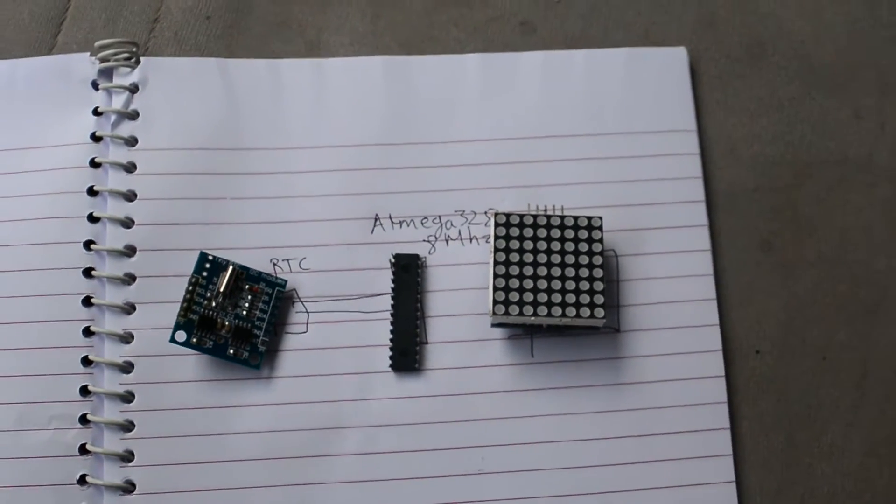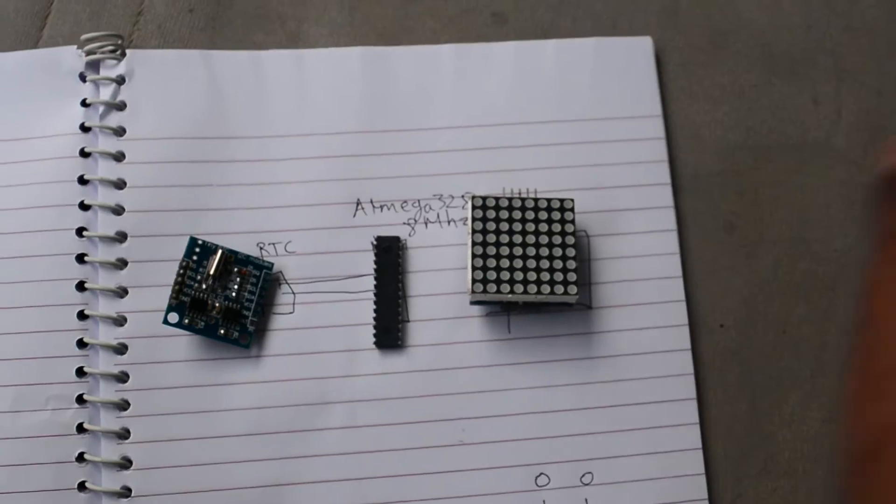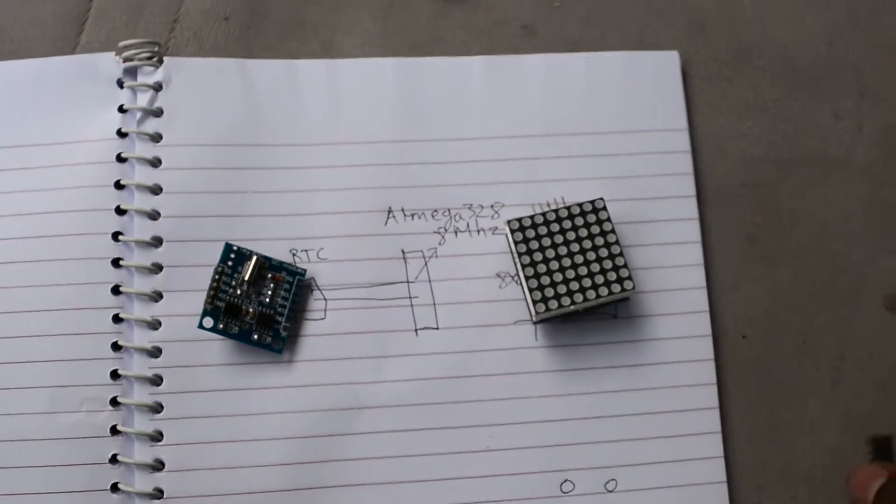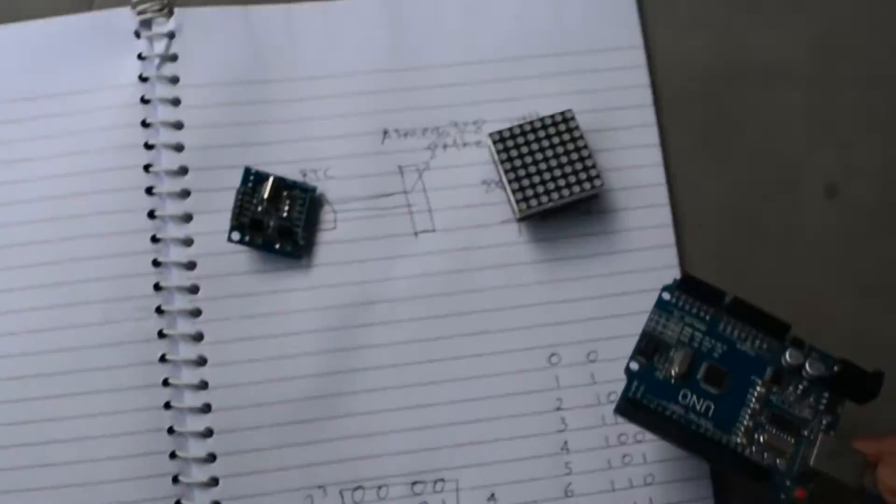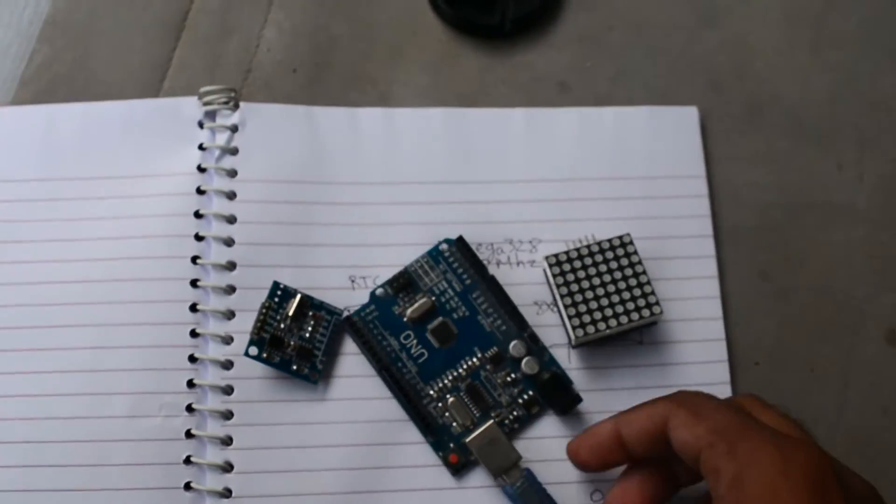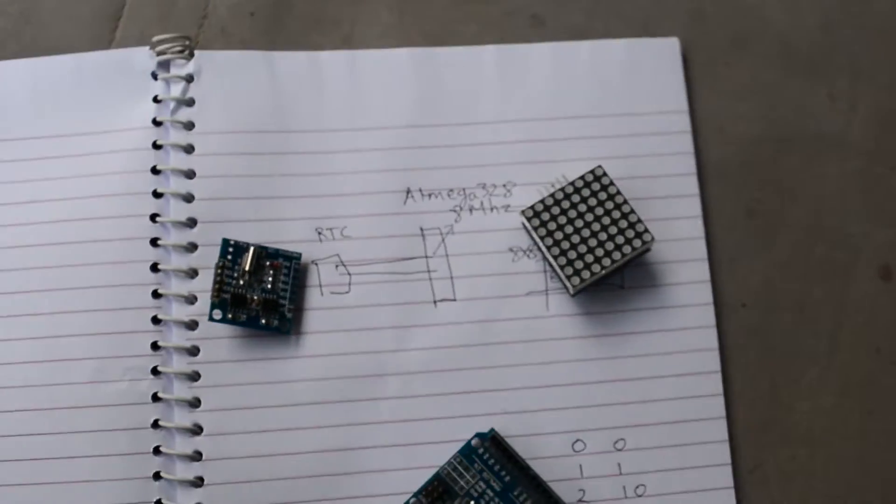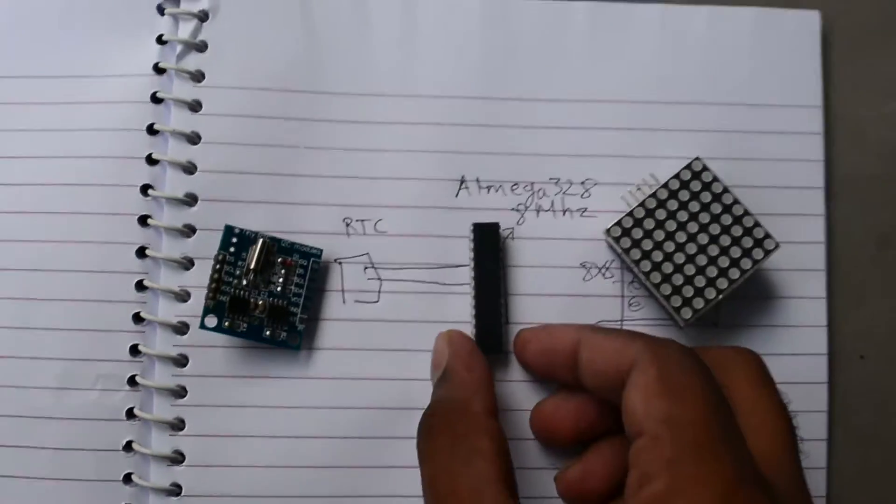So now we are going to prototype the binary clock using an Arduino. So instead of this, we will use an Arduino to prototype and program. And then once the program is finalized, we will upload it to the ATmega 328 and breadboard it up.